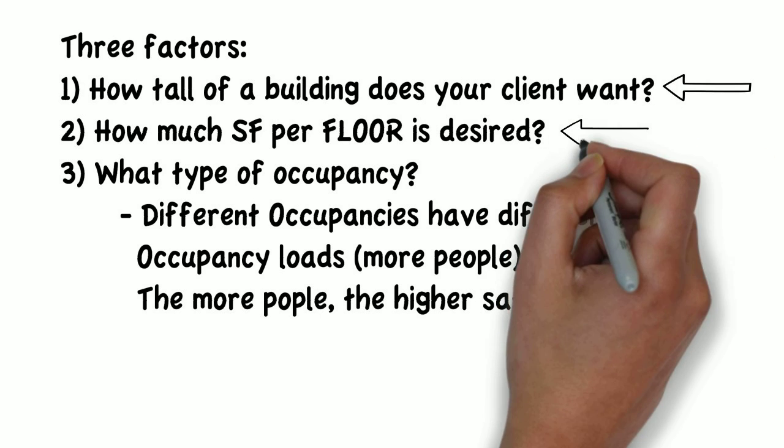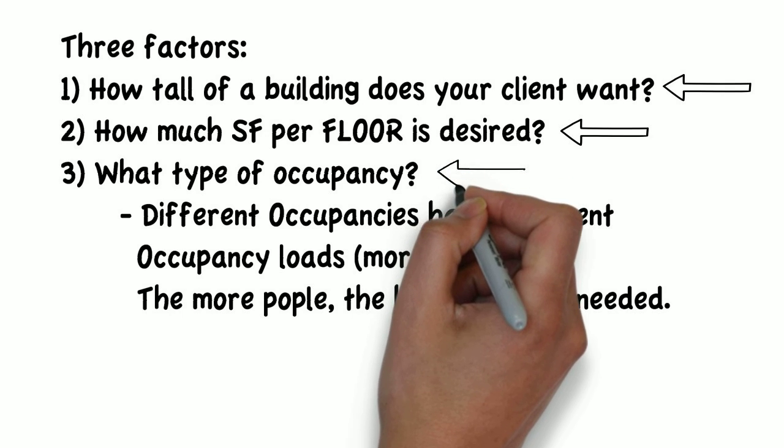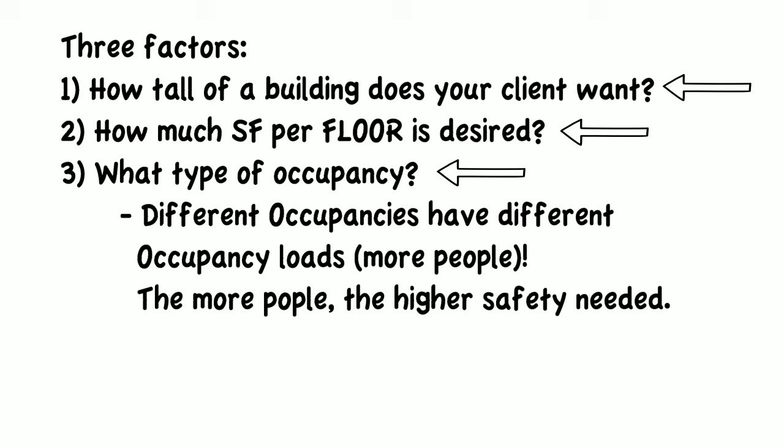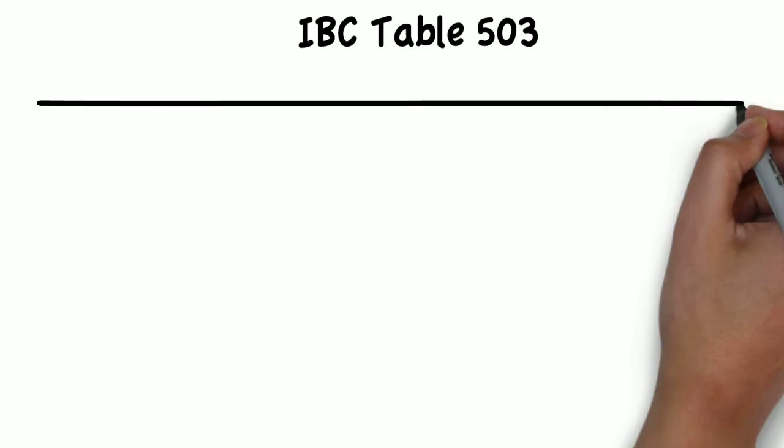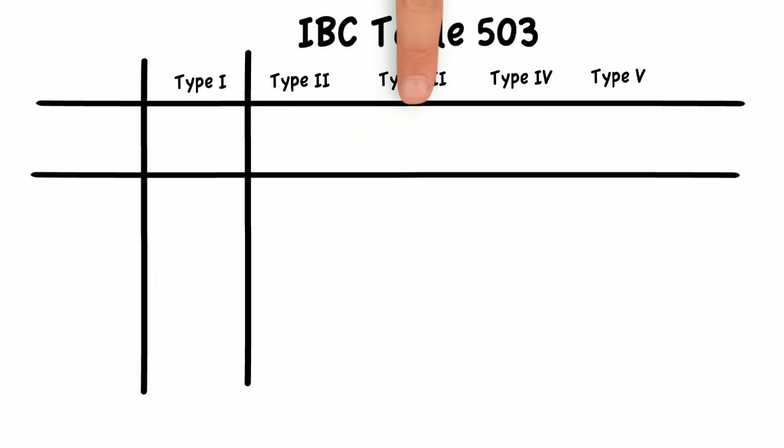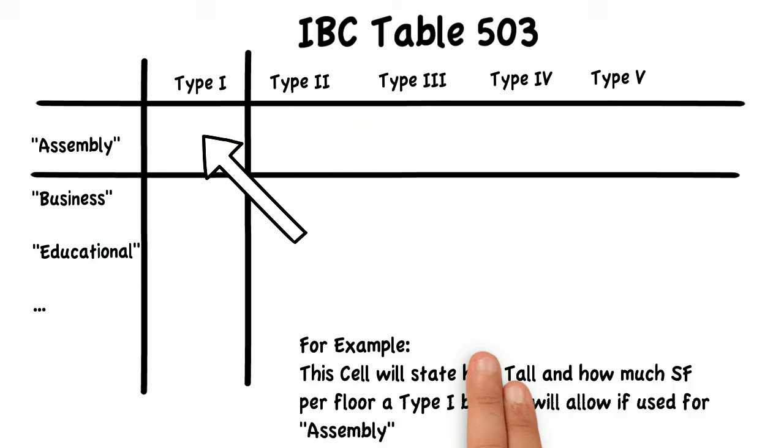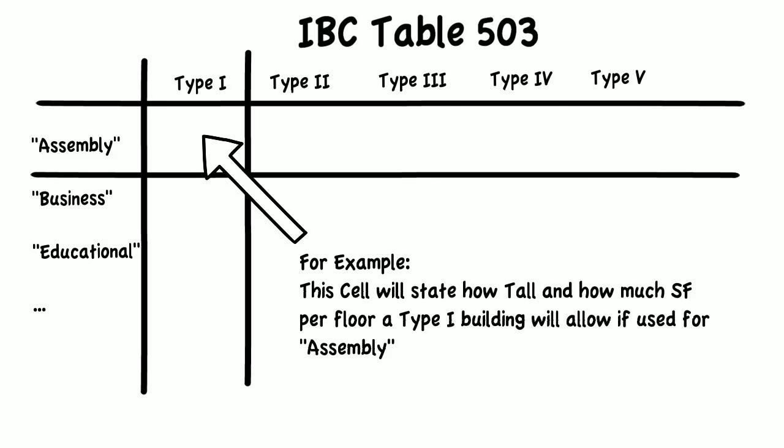Once you know how tall, how much square footage, and what your building will be used for, you can determine what building type you need to design. IBC Table 503 will help you decide which building type to use based on these factors.